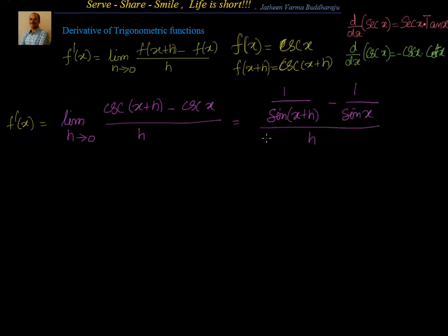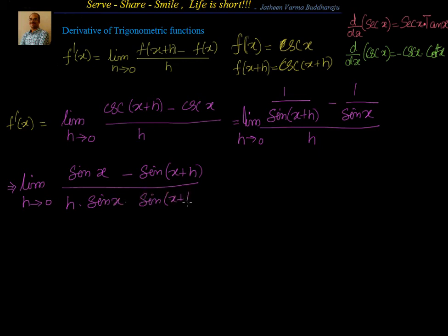And I have h here and h tends to 0, limit of this which is equal to limit of h tends to 0. I have sin of x minus sin of x plus h divided by numerator is sin of x minus sin of x plus h. In the denominator I will have h into sin x into sin of x plus h.